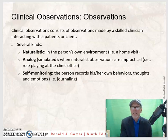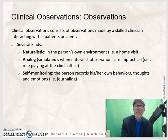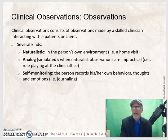Lastly in the assessment domain, there are observations. Clinical observation consists of watching acutely from skilled clinicians interacting with a client, and there are several kinds. Naturalistic observation involves looking at and interacting with the patient in their own environment, such as during a home visit. Analog or simulated observation is used when naturalistic observations are not practical, and might include role-playing at the clinic office. Then there is self-monitoring, where the person records his or her own behaviors, thoughts, and emotions — an example of that would be through journaling.